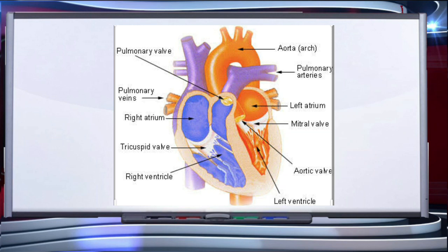Out of four chambers, two relatively small upper chambers are called atria and two larger lower chambers are called ventricles. A thin muscular wall called the inter-atrial septum separates the right and left atria. The thick-walled interventricular septum separates the left and right ventricles. The atrium and ventricle of the same side are also separated by thick fibrous tissue called the atrioventricular septum.